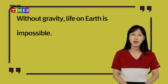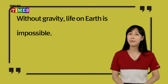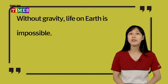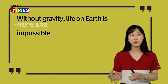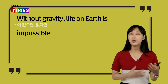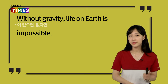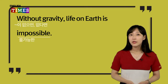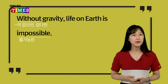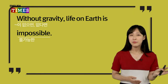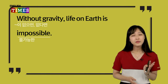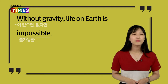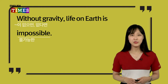그 다음 문장 보도록 할까요? Without gravity, life on earth is impossible. 중력이 좋은 것일까요? Without 다음에 이런 표현을 쓰면 '이 뒤에 것이 없다면, 없이는'이라는 의미가 되겠죠. 즉, 중력이 없다면 지구에서의 삶은 impossible — 불가능합니다. 중력이란 것이 없다면 지구에서의 삶은 불가능합니다.